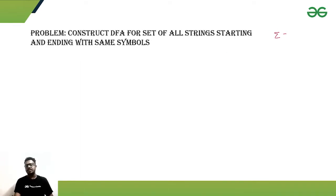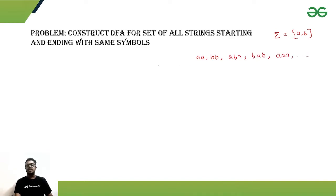Suppose our alphabet is {a, b}. Same symbol means we will accept strings like 'aa', 'bb', 'aba', 'bab', 'aaa', and so on. Adding to that, it should also accept the null string, because that is starting and ending with the same symbol — that is actually no symbol. It should also accept a single-symbol string.